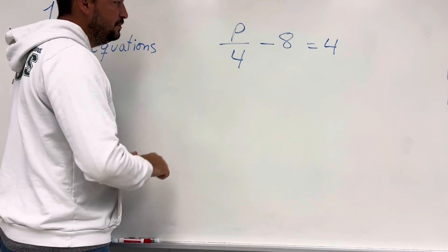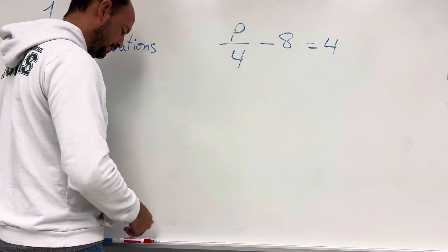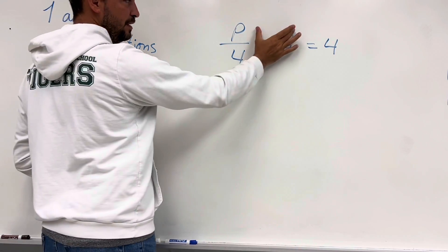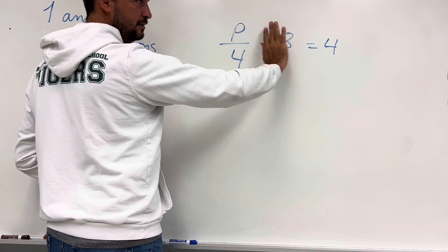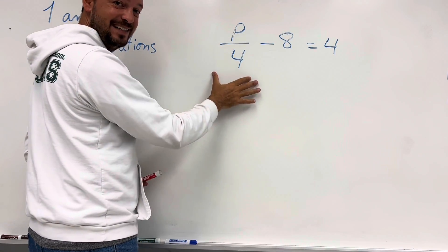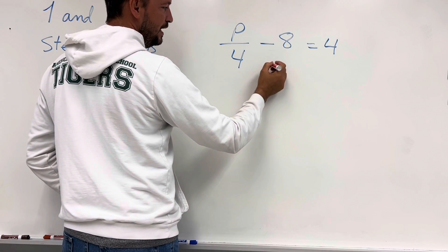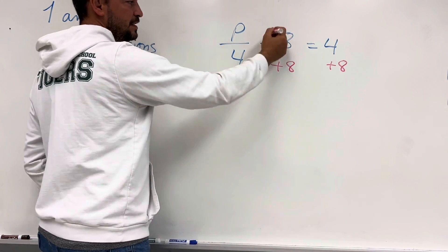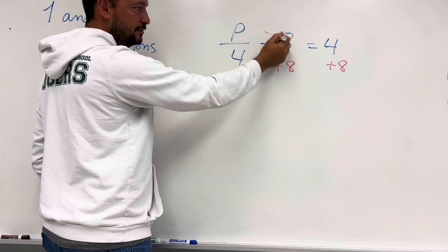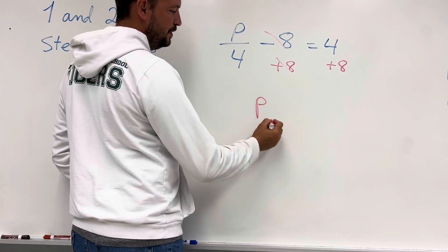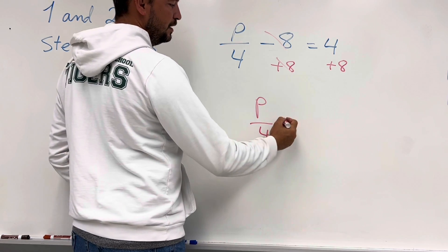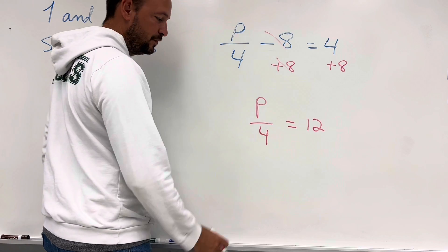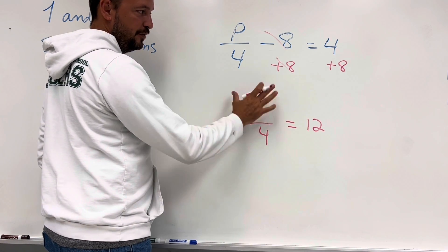Now we have p divided by 4, minus 8, equals 4. This is the same two-step process. First, I'm going to remove the negative 8 by adding 8 on both sides. Simplifying, negative 8 plus 8 is 0, so we're left with p divided by 4 equals 12.